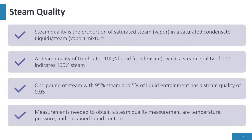Steam quality — what is steam quality? It's the proportion of saturated steam vapor in a saturated condensate liquid-steam vapor mixture. A steam quality of zero indicates 100% liquid or condensate — it's all going to be water. A steam quality of 100 indicates 100% steam. That's what heat transfer is designed for: 100% steam quality, which is the correct amount of latent energy (BTU per pound) and sensible energy (BTU per pound) of the vapor at a given pressure.